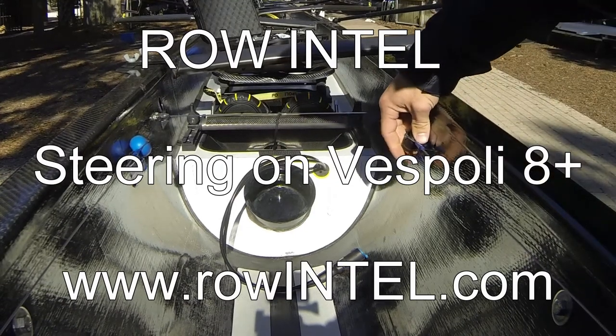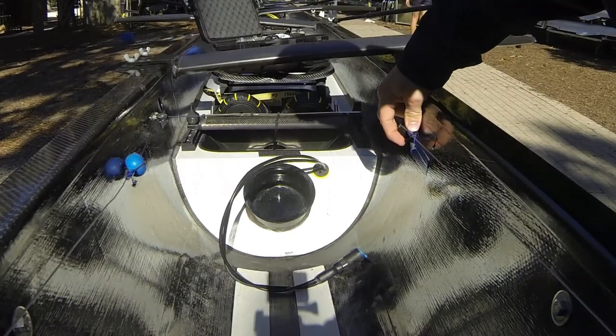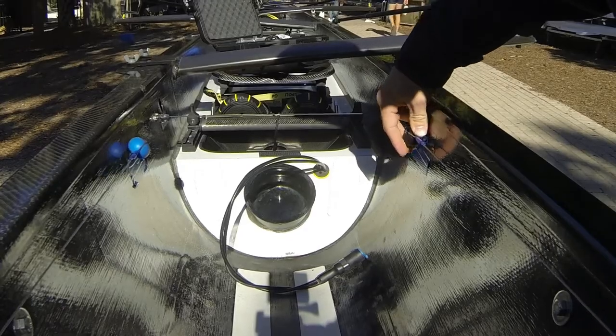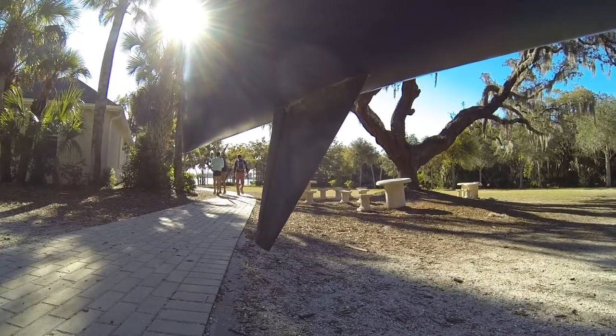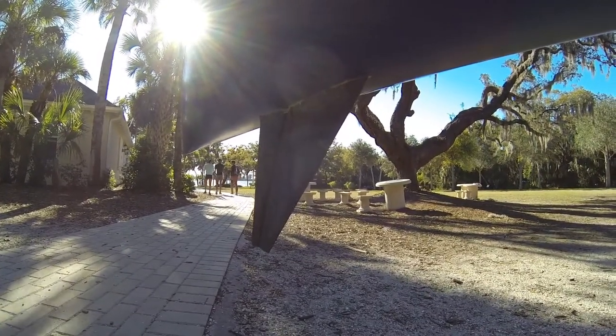So here we have our two steering knobs. Pushing your right hand forward would make the boat go to the right or to starboard. Moving our right hand forward pulls the boat to starboard.